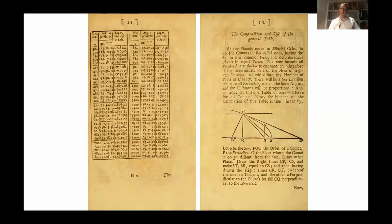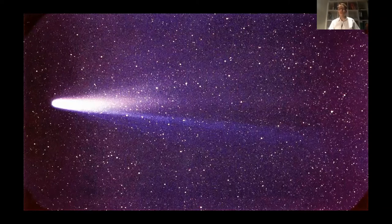In this work, which contains lots of numbers and complicated figures, he actually wrote: 'I dare venture to foretell that it will return again in the year of 1758.' He wrote this in 1705. Unfortunately, Halley did not live to see his prediction come true, but it actually happened. Here you see a picture of Halley's Comet upon its first appearance in our solar system, which was in 1986.